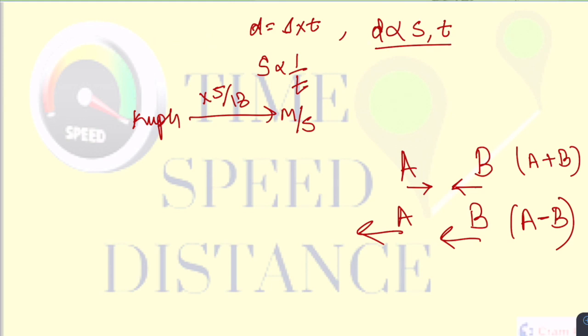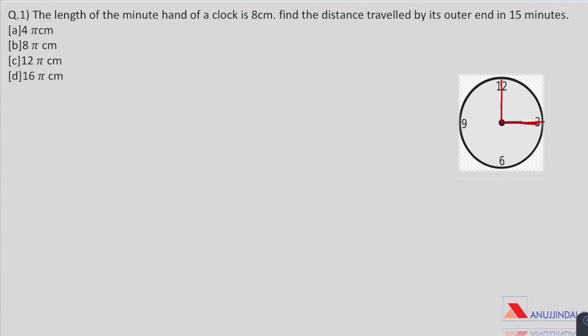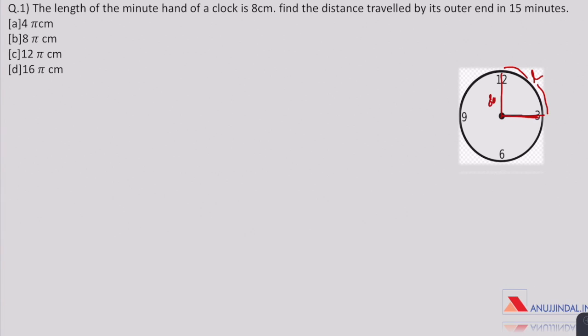Moving forward to the questions. Question 1. The length of the minute hand of a clock is 8 cm. Find the distance travelled by its outer end in 15 minutes. The minute hand of the clock travels from here to here and we have to find this length. The radius is 8 cm.